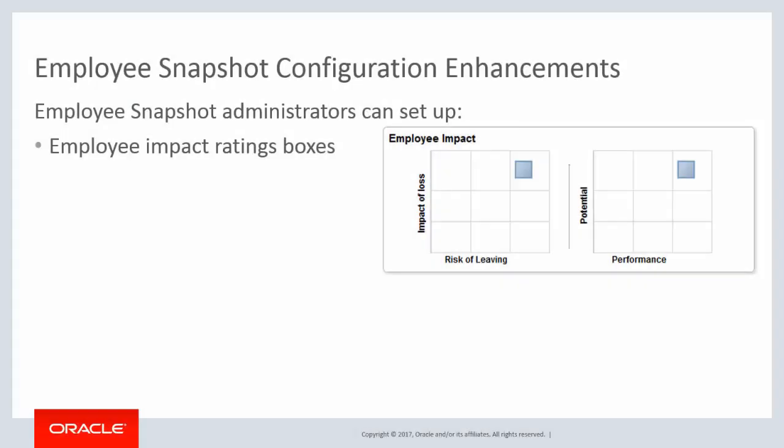The Employee Snapshot Administrator can now configure and display ratings boxes on the Employee Snapshot pages, where a Manager can view and compare various employee ratings. The PeopleSoft application provides setup pages for the Performance vs. Potential ratings box, which displays an employee's performance rating in relation to potential, and the Risk vs. Loss ratings box, to identify an individual's risk of leaving versus the impact on the organization.